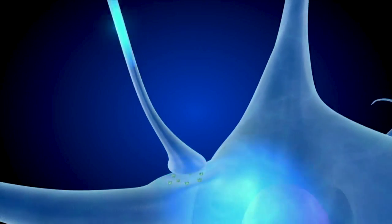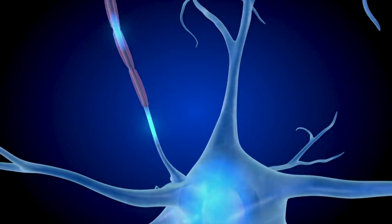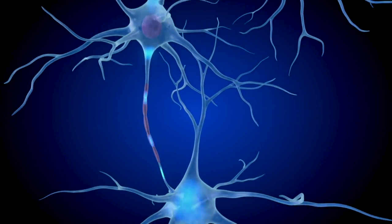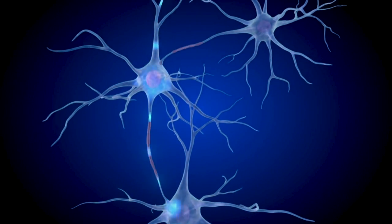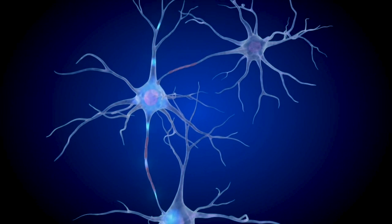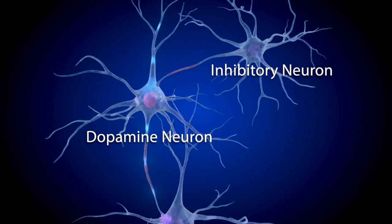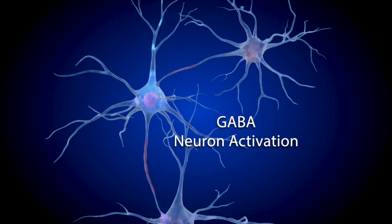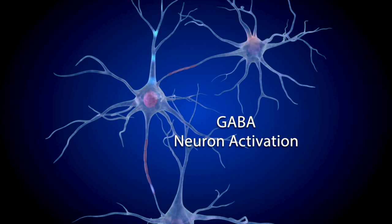Dopamine transporters in the presynaptic neuron are not the only things that control how much dopamine is released or how often. Other nearby neurons also play important roles in regulating neural signals. For example, an inhibitory neuron near the dopamine presynaptic cell can reduce the amount of dopamine delivered to the synapse by releasing the neurotransmitter GABA. Inhibitory GABA signals change in response to local brain activity, adjusting the amount of dopamine released by stimulated dopamine neurons.